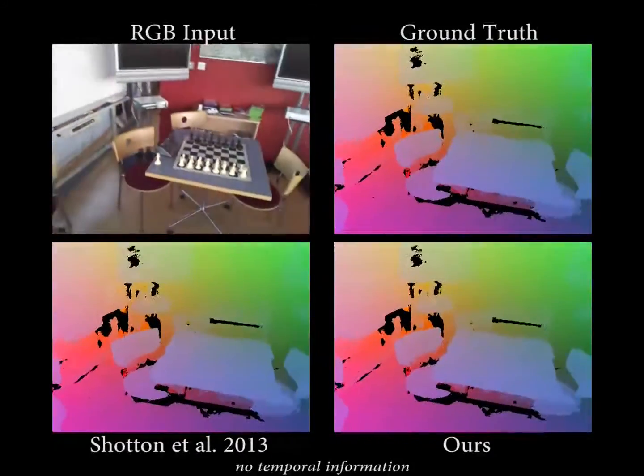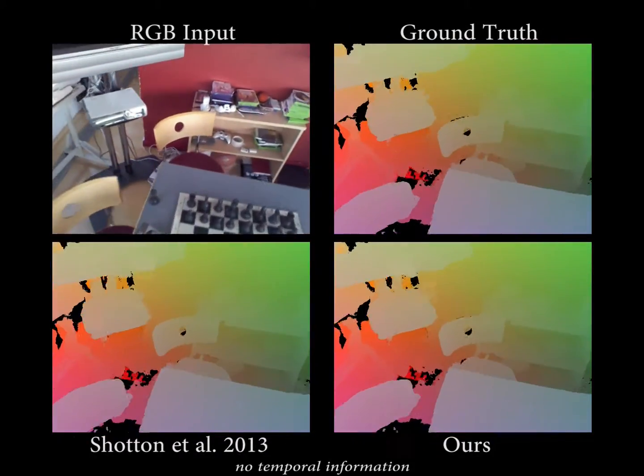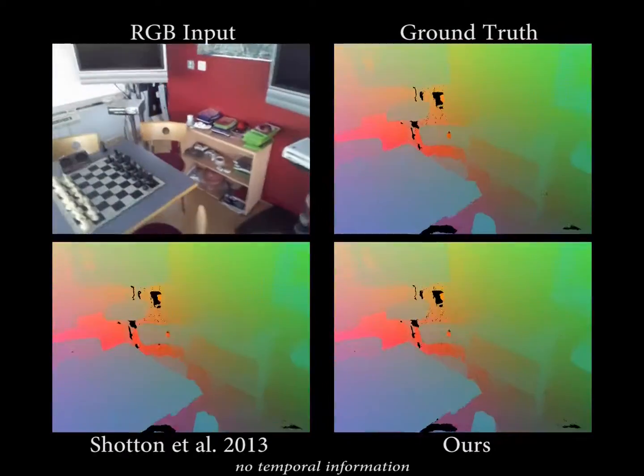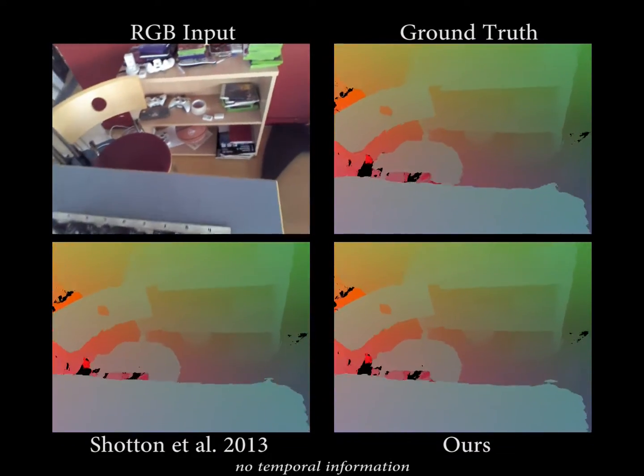As we can see, our method produces smooth and stable tracking results very close to the ground truth trajectory. Note the jittering of the previous method.